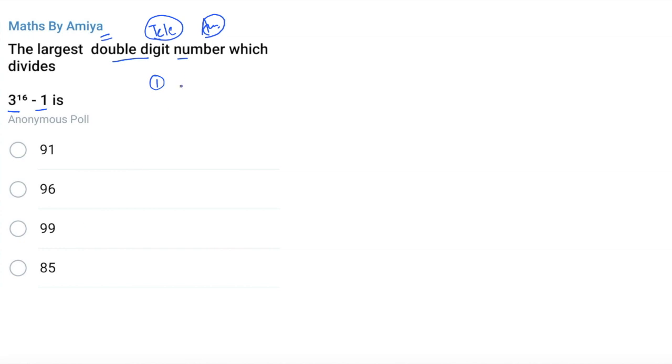If options are not given, then we have to factorize this one like 3^8 plus 1 and 3^8 minus 1 and so on. But if options are given, we have other two conditions or methods.